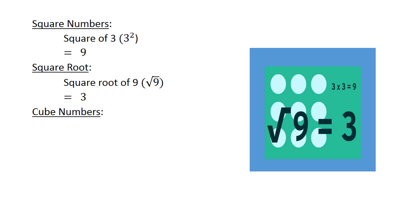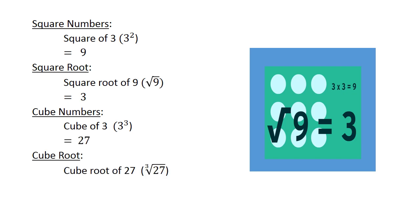Cube numbers: the cube of 3 equals 27. Cube root: the cube root of 27 equals 3.